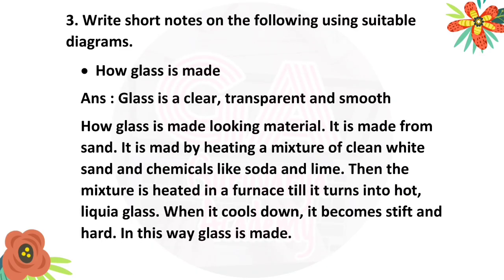Third question: Write short notes on the following using suitable diagrams. First: How is glass made? Glass is a clear, transparent and smooth-looking material. It is made from sand, by heating a mixture of clean white sand and chemicals like soda and lime. The mixture is heated in a furnace until it turns into hot liquid glass. When it cools down, it becomes stiff and hard. In this way, glass is made.